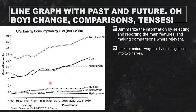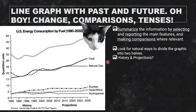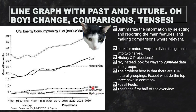Here we have three groups. We could go history and projections, but let's look for ways to combine data into groups. For example, petroleum, coal, and natural gas all have something in common — they're fossil fuels. Nuclear energy is not renewable; it is however an alternative energy. Quick math: 15 plus 20 is 35 — these two together are about the same as that one.